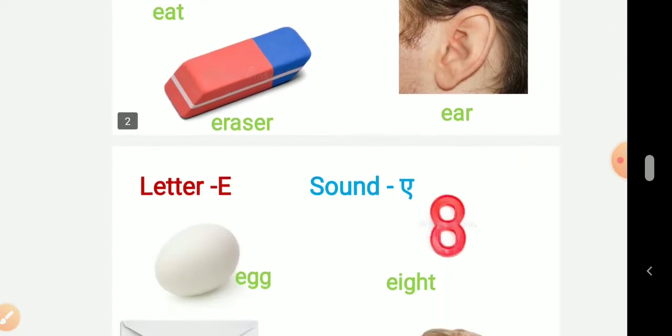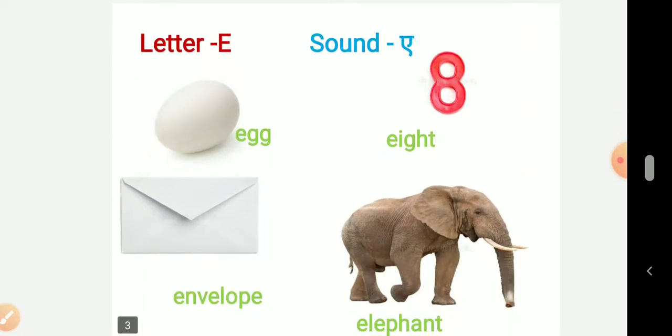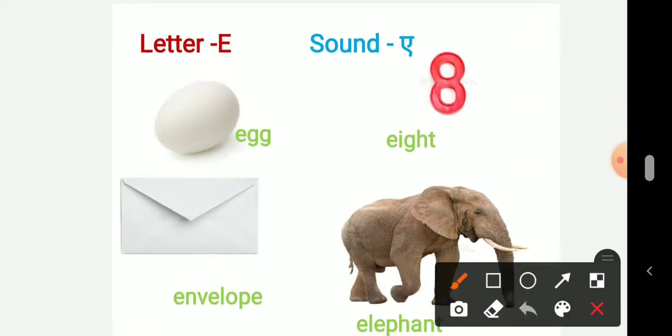Now let's see other pictures. Here you can see letter is E, but the sound is A. What is the sound? A. Now first picture it is egg. So A sound it starts, egg.